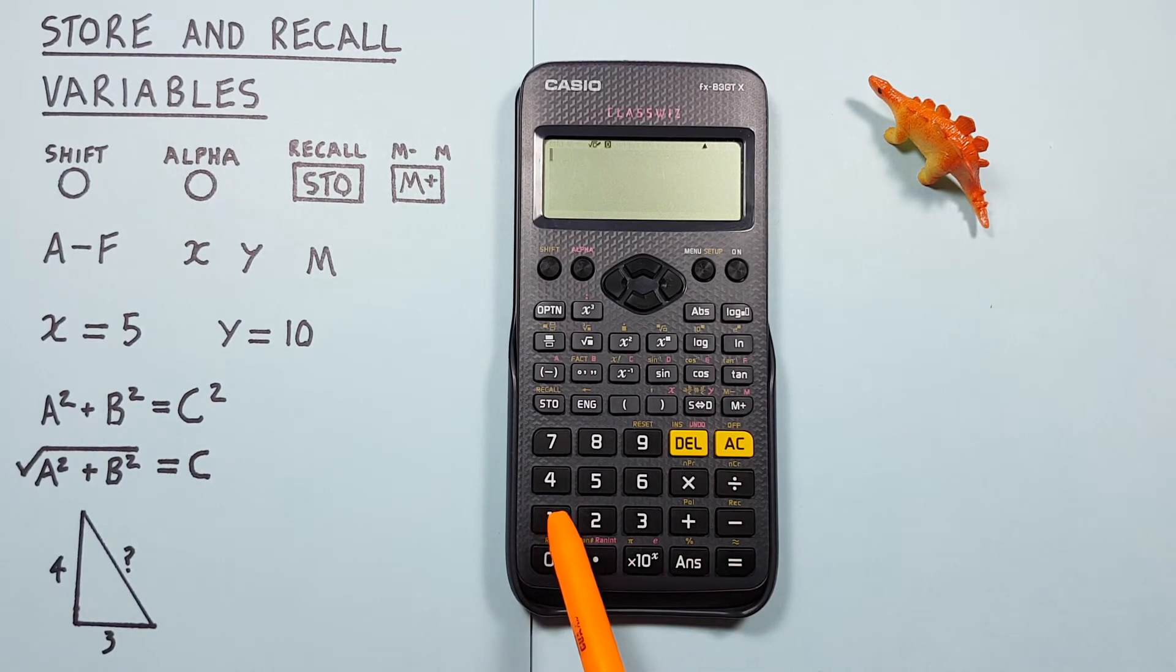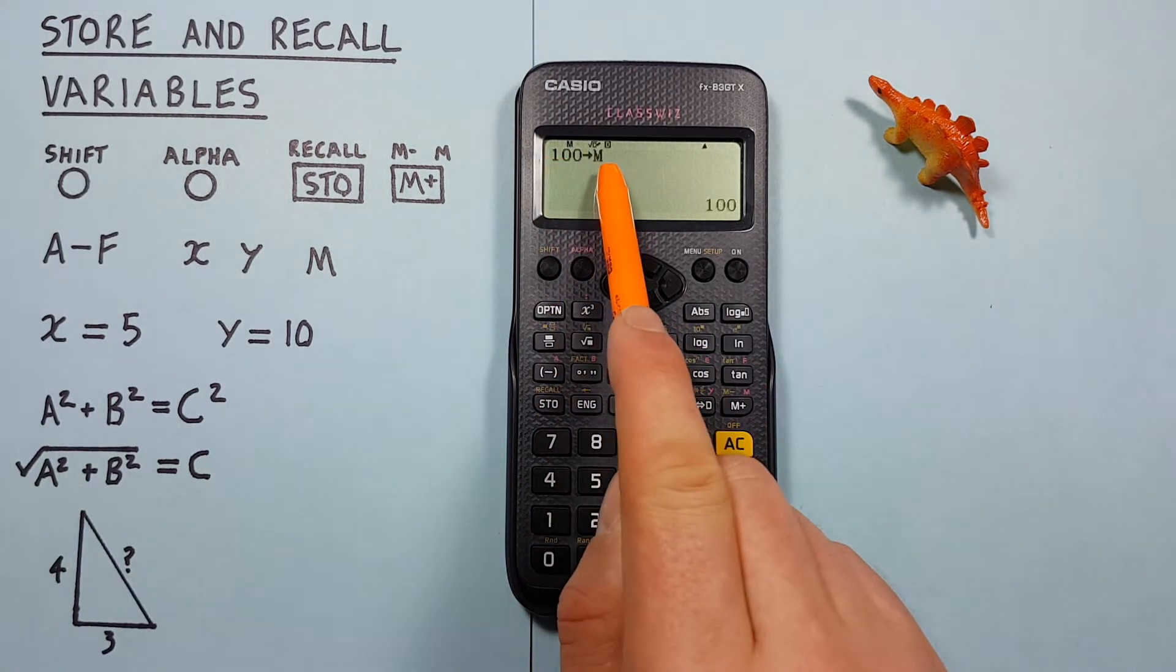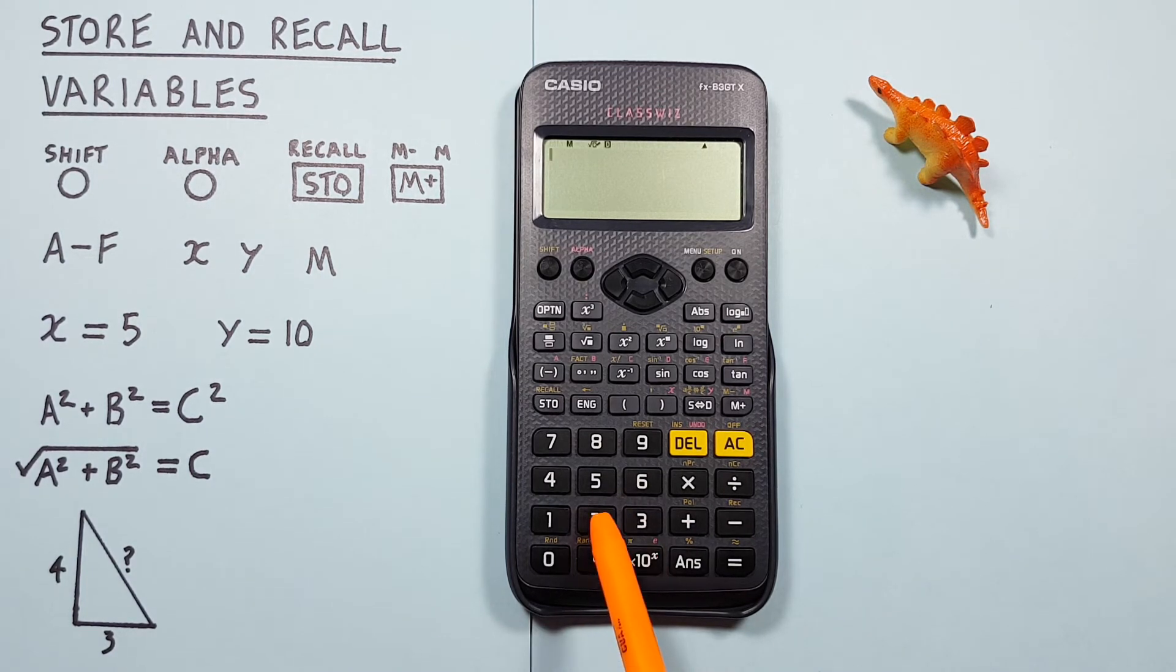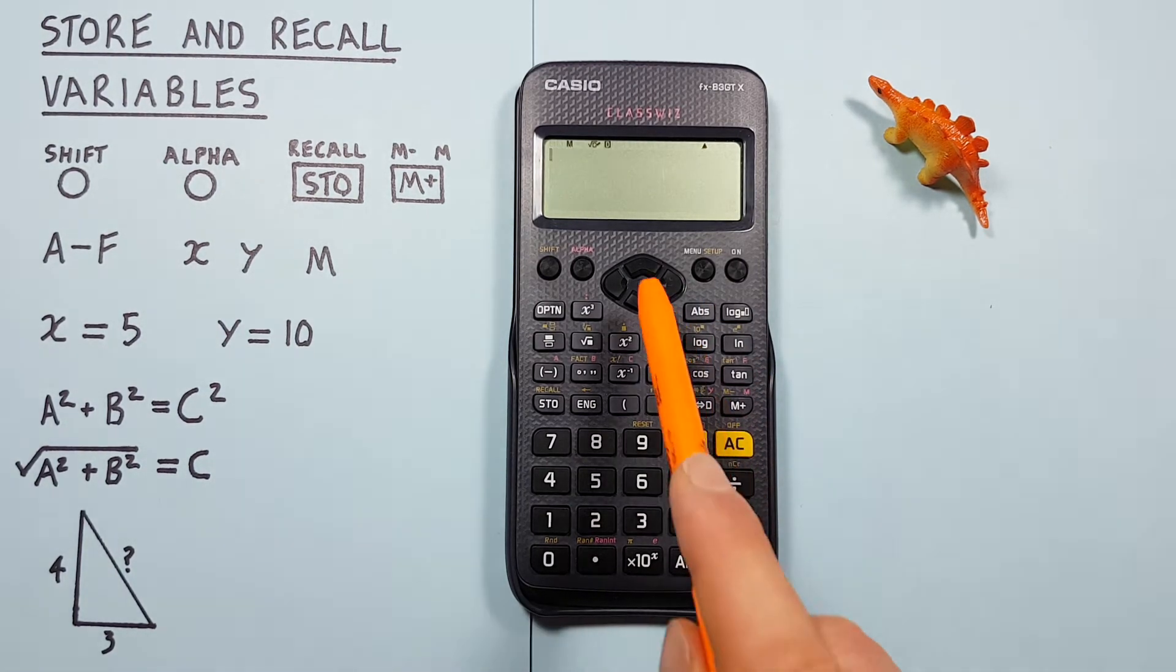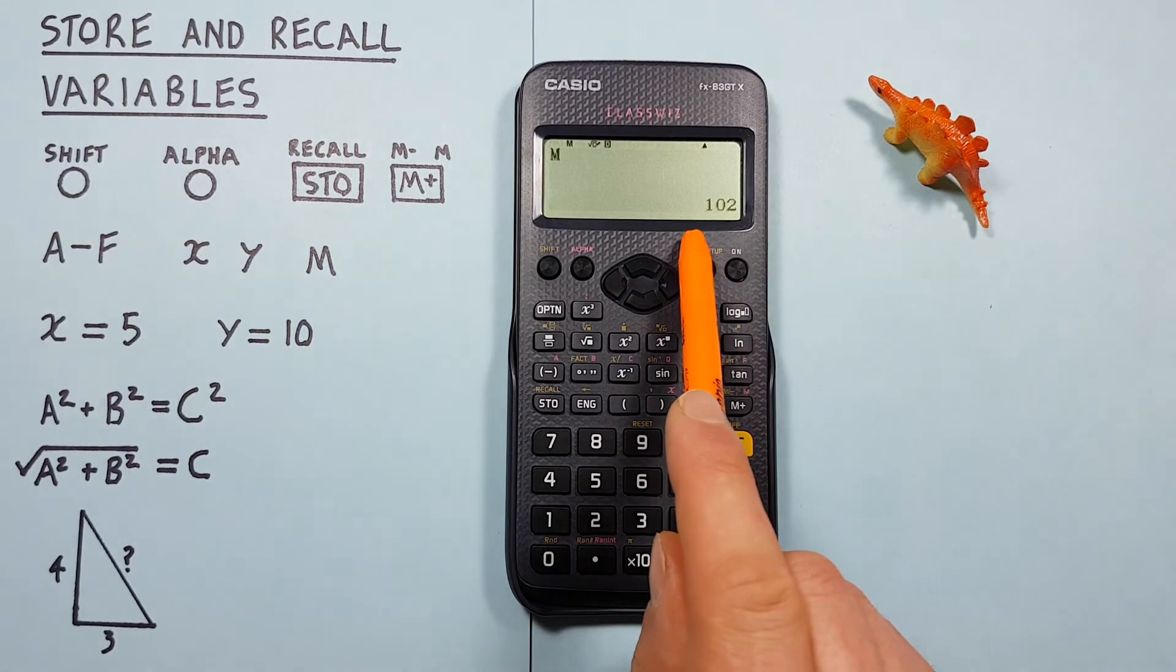For example if we stored 100 into our independent memory, 100 into M, and then wanted to add 2 to it, all we would have to do is place 2 on our screen and then press the M plus key. Now if we recall our M, we see it's 102.